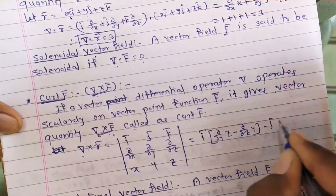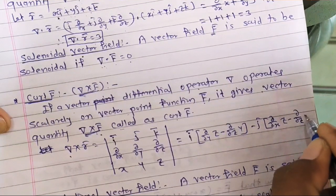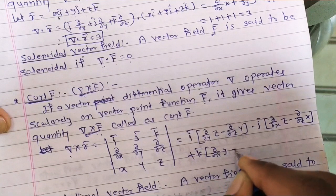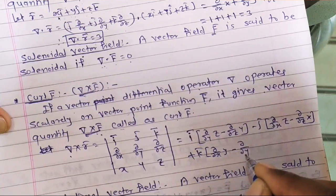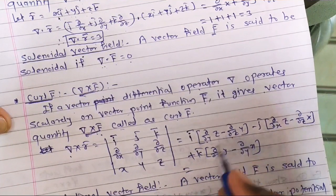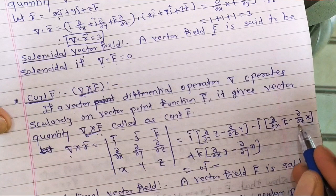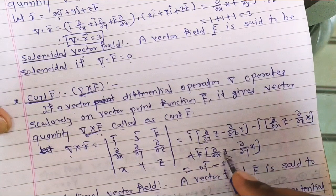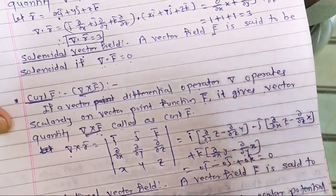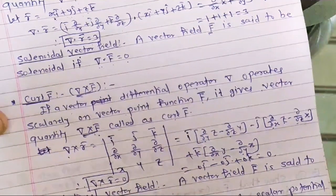Expanding the determinant: del cross r̄ = ī[(∂/∂y)z − (∂/∂z)y] − j̄[(∂/∂x)z − (∂/∂z)x] + k̄[(∂/∂x)y − (∂/∂y)x]. The partial derivative of z with respect to y is 0, and the partial derivative of y with respect to z is 0 — these are independent variables. Similarly all other mixed partial terms are 0.